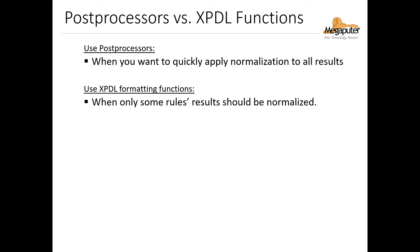Now that we've gone over post processors, a question some of you might have is: when should I use the post processors, and when should I use the XPDL functions for normalizing my output? A good rule of thumb is the following: if you'd like to quickly normalize the results of all your rules, then you should use the post processors. But if you're only wanting the results of some rules normalized, then you should use the XPDL functions.